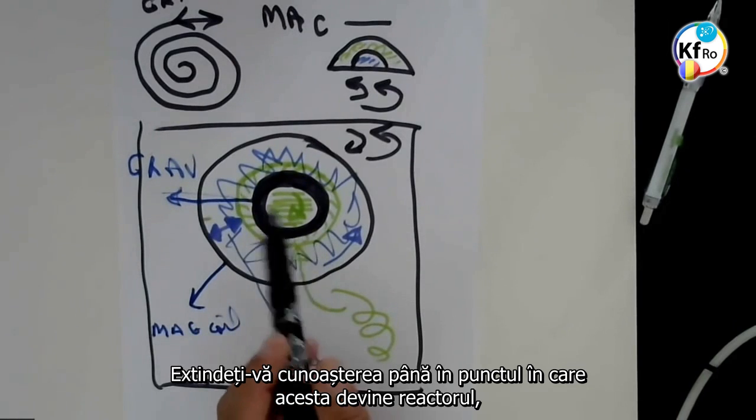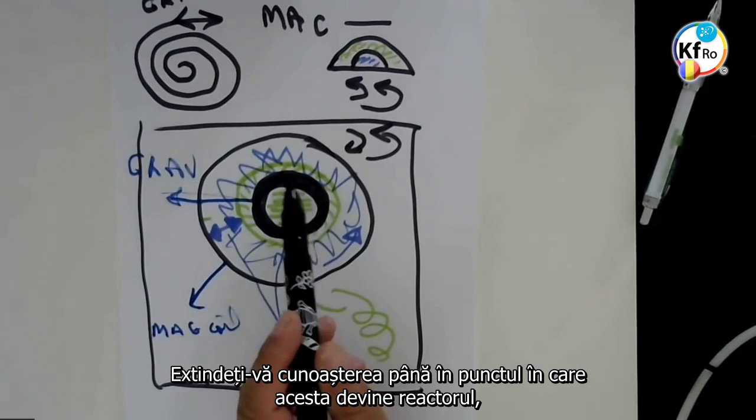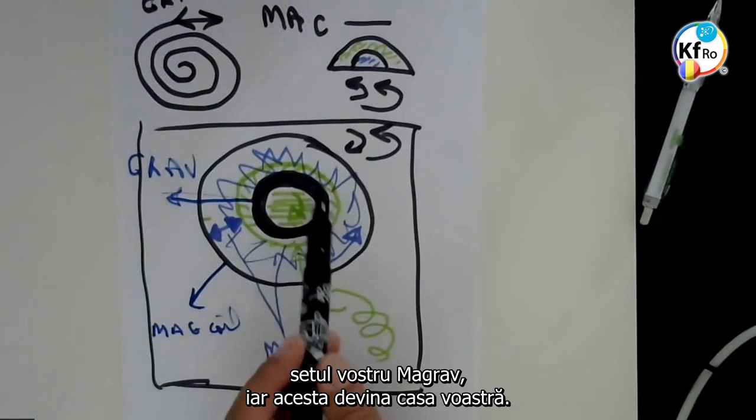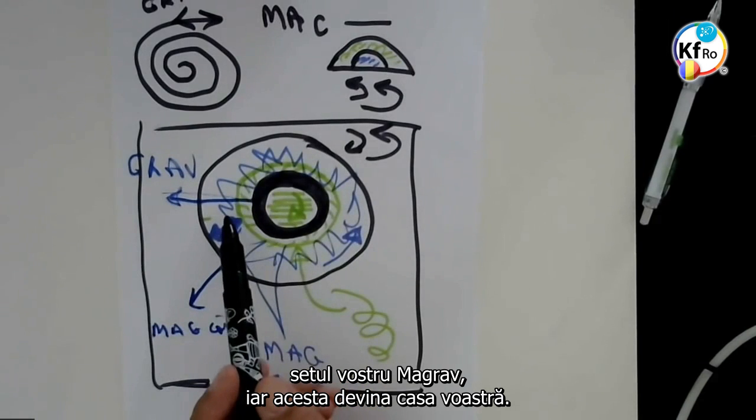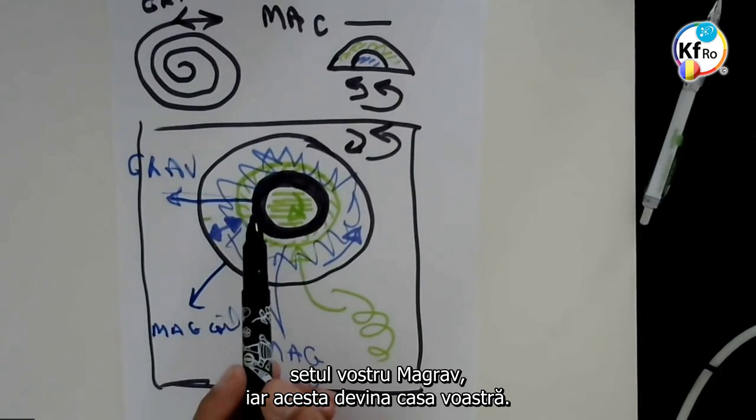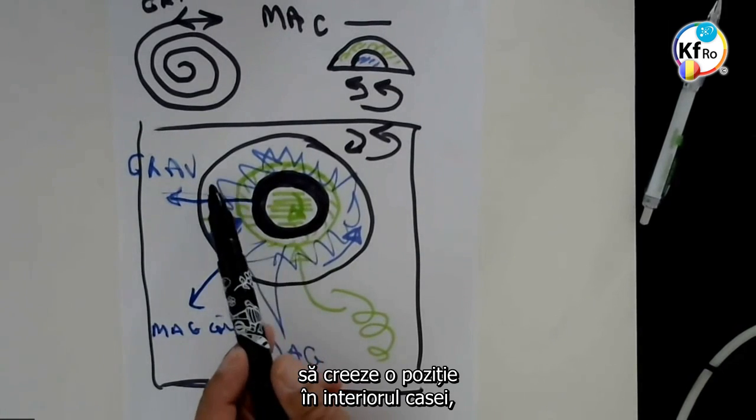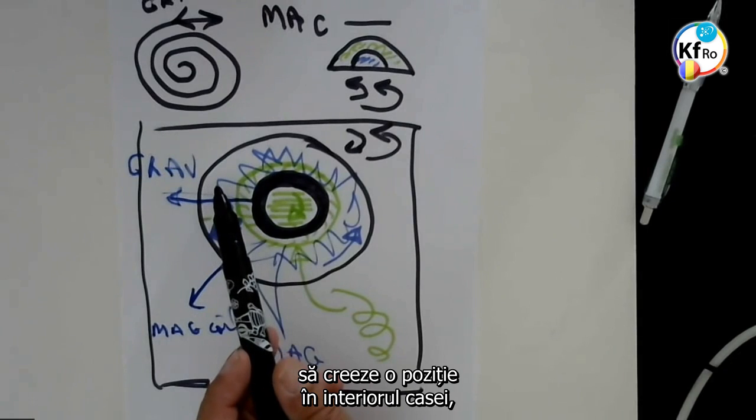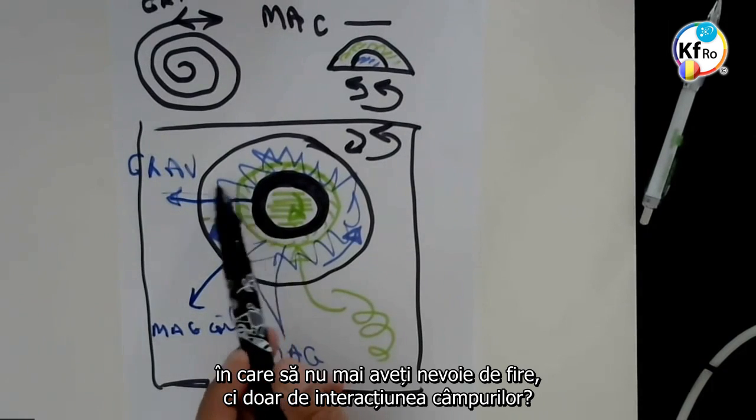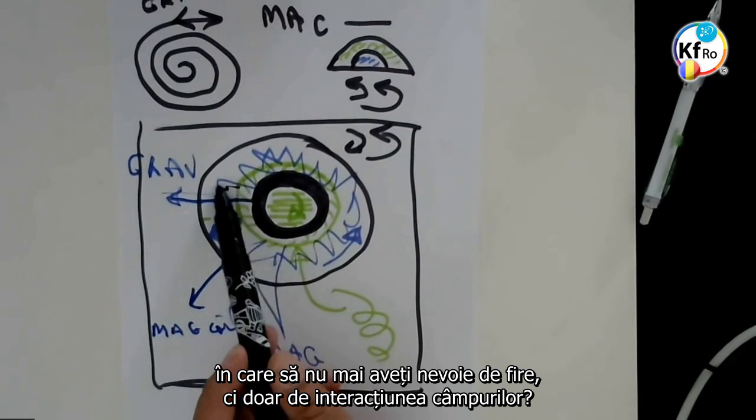Extend the knowledge to the point where this becomes your core MaGrav set and this becomes your house. Can we create a system that the interaction of your coils creates a position within the house that you don't need no wiring, you work with the Field interaction?